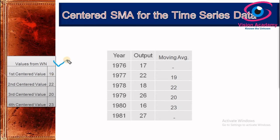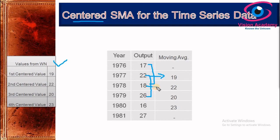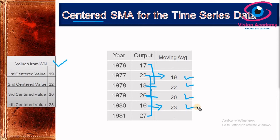Now let us insert the moving average values into the time series table. We insert each value at the center of the three observations used to compute it. The first value, 19, is centered at 1977. The second value, 22, is centered at 1978. The third value, 20, is centered at 1979. The fourth value, 23, is centered at 1980.